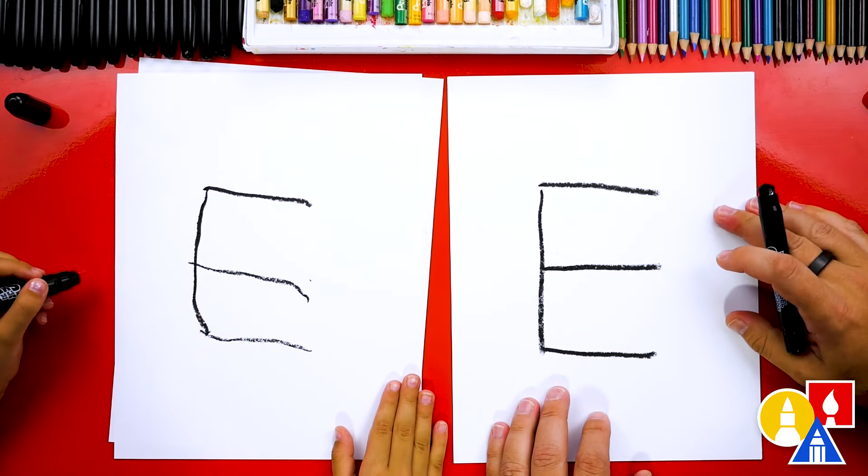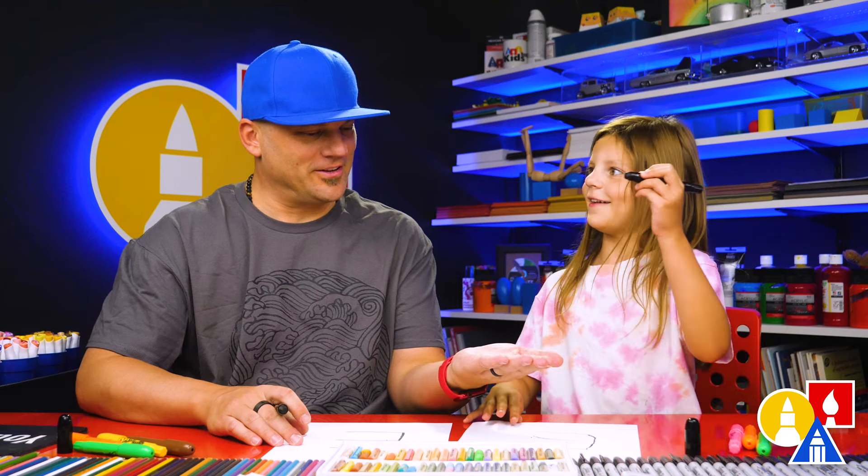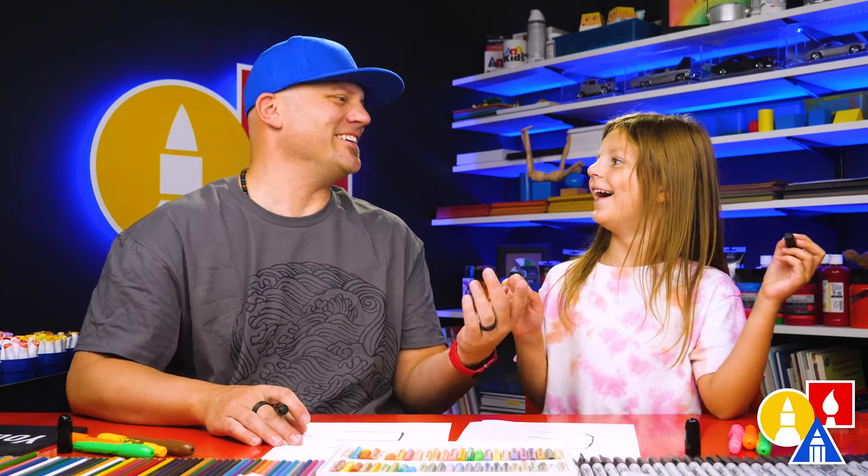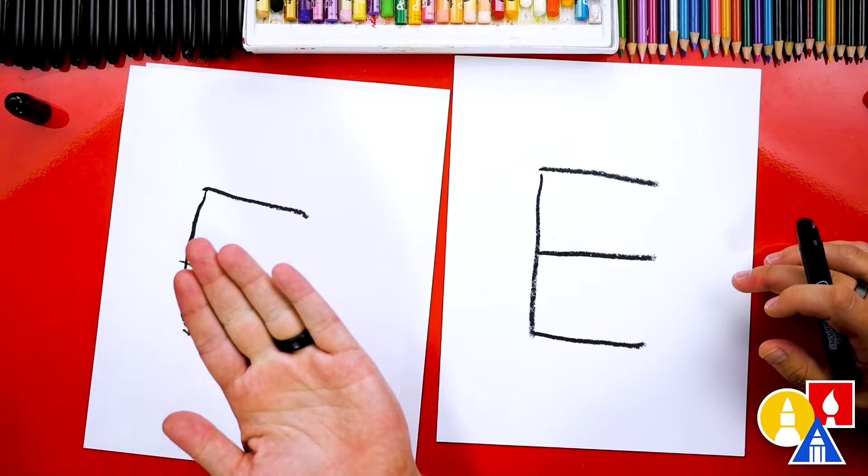There's our letter E. Good job. Give me five. You're going to give me five with the crayon with this hand. Yes.